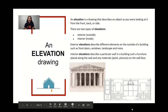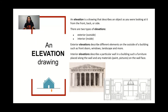Lastly, we'll talk about an elevation drawing. An elevation is a drawing that describes an object as you are looking at it from the front, back, or side. There are two types of elevation: an exterior elevation, which means outside, and an interior elevation, which means inside. Exterior elevations describe different elements on the outside of a building, such as front doors, windows, landscape, and exterior materials. An interior elevation describes a particular wall within a building and can show things like furniture, lighting, interior finishes — which include posters or pictures hung on the wall — and things you would see within the inside of a building.